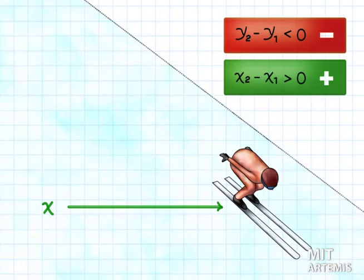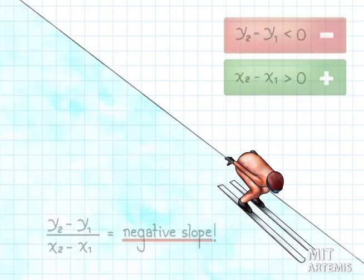The slope of a line does not depend on the two points you pick. This can be demonstrated by using similar right triangles.